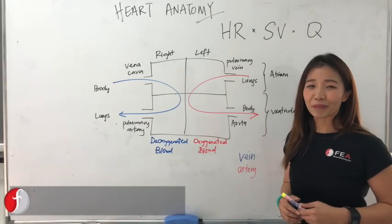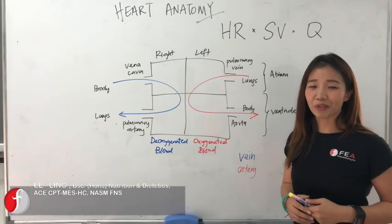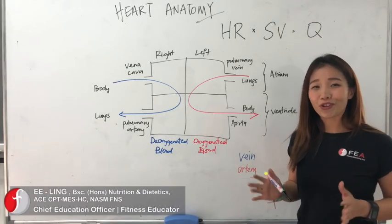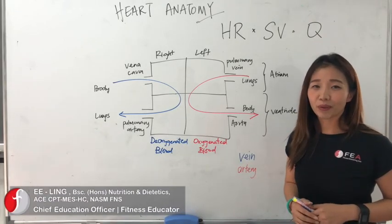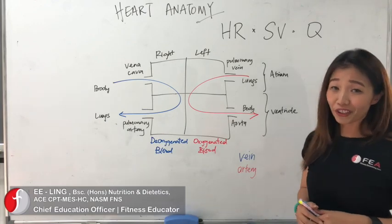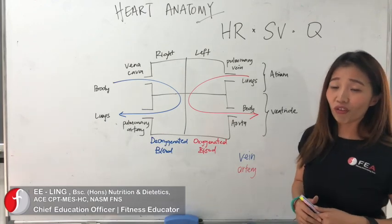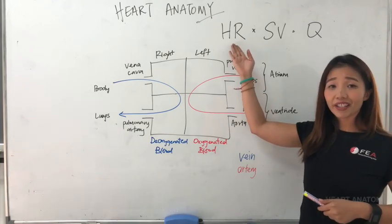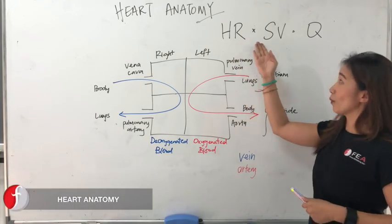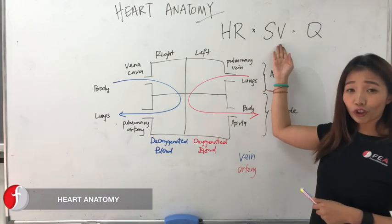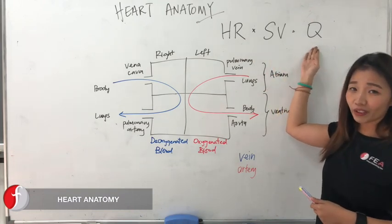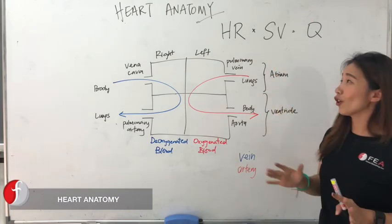Hi! We're going to be talking about heart anatomy today. And before we go through the heart anatomy, we're going to look at three things first. So over here, we have what we call heart rate, we have stroke volume, and we have cardiac output.